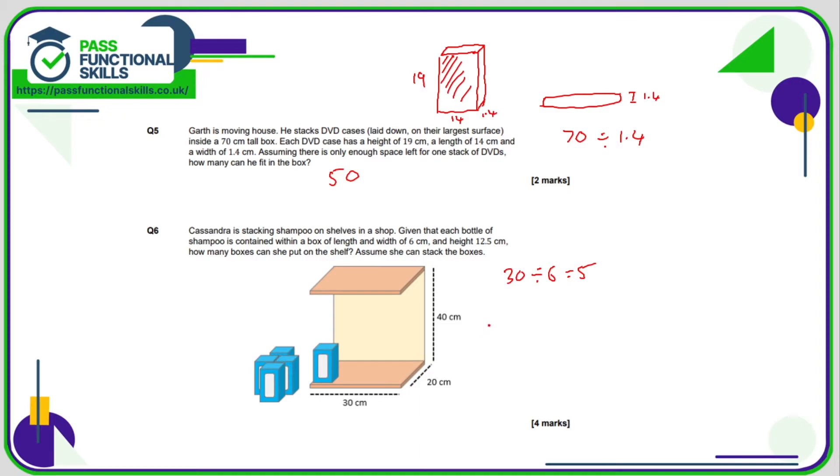Now the depth is 20, and this measurement here is 6. So what is 20 divided by 6? Well, 20 divided by 6 is just over 3. So we're going to have to round that down to 3. So we can fit 5 by 3. And going up, we want 40 divided by, not by 6, because the height of these is 12.5. And 40 divided by 12.5 is 3.2. So therefore, only 3 vertically.